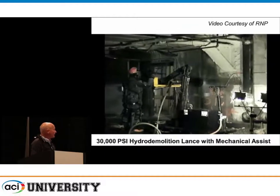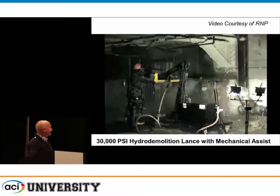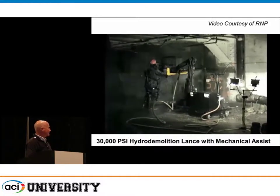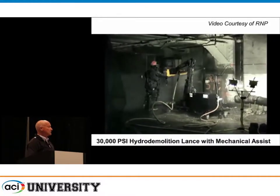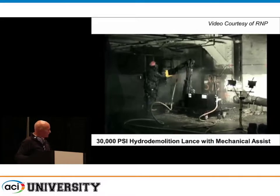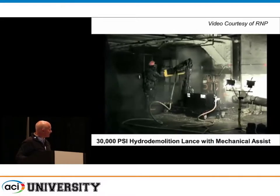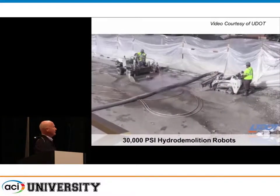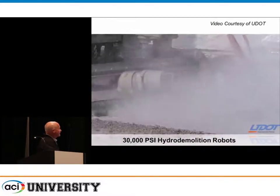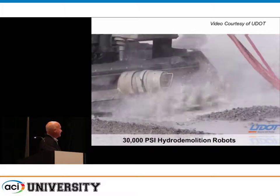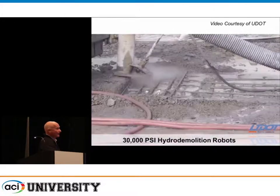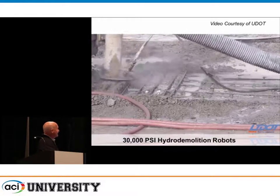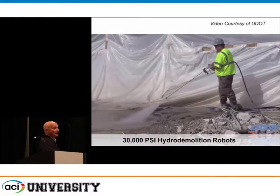There are lots of ways to remove concrete. Besides chipping hammers, high-pressure water is one option. This semi-robotic high-pressure lance water blaster operates at about 30,000 PSI. High-pressure water jetting at 30,000 to 45,000 PSI is very popular for overlays and surfaces on bridge decks and dams — you can see how it removes the concrete and cleans up around the steel.